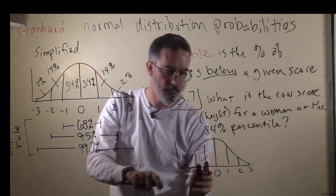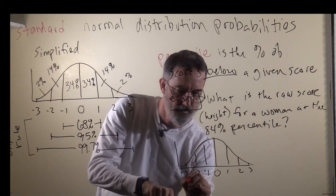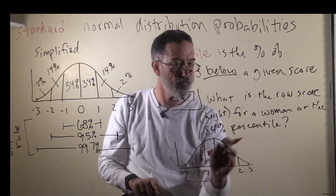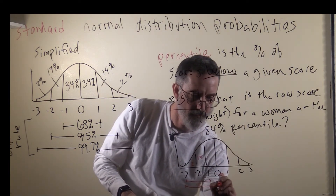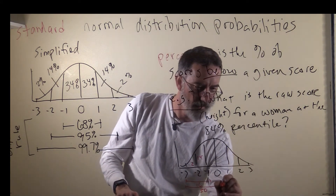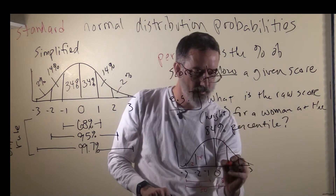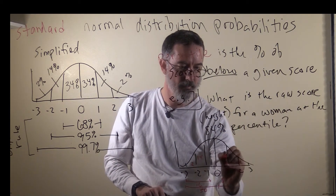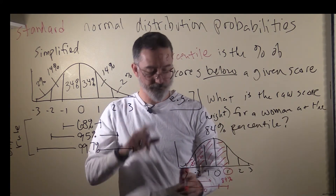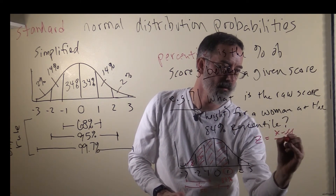Adding up from the bottom, because percentiles are only below: between negative 3 and negative 2 that is 2, between negative 3 and negative 1 that is 2 plus 14, which is 16. We need to get all the way up to 84. Going from negative 3 to 0 gives us 50, we are still not there, but then adding the other 34 gives us our 84%. So this woman's z-score is 1, because the area underneath that adds up to 84%.